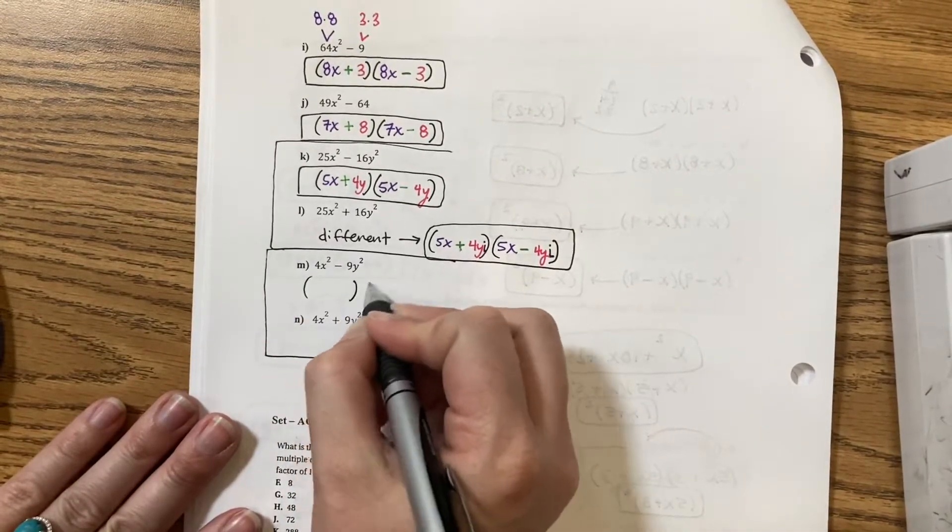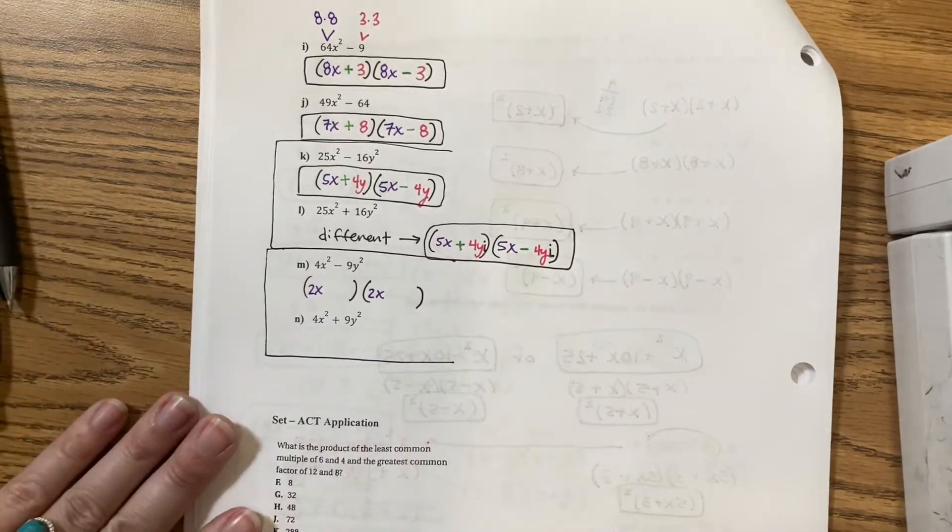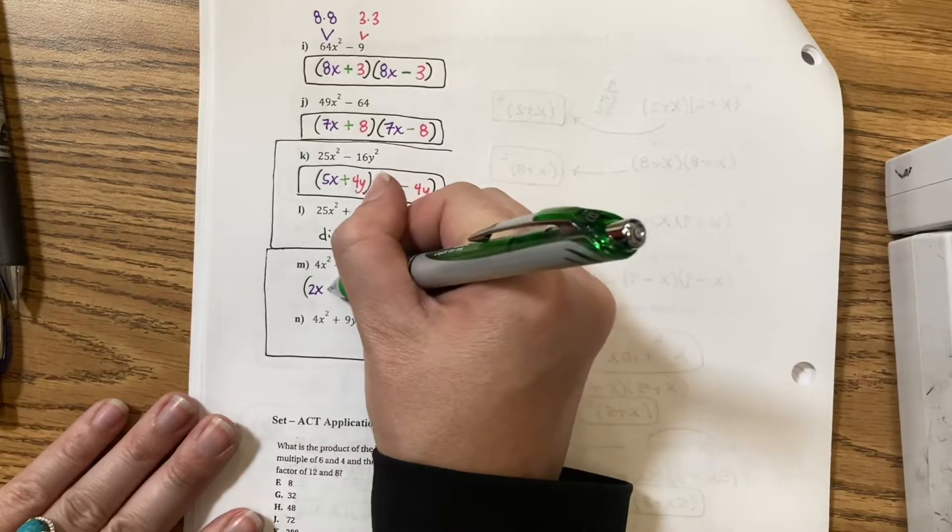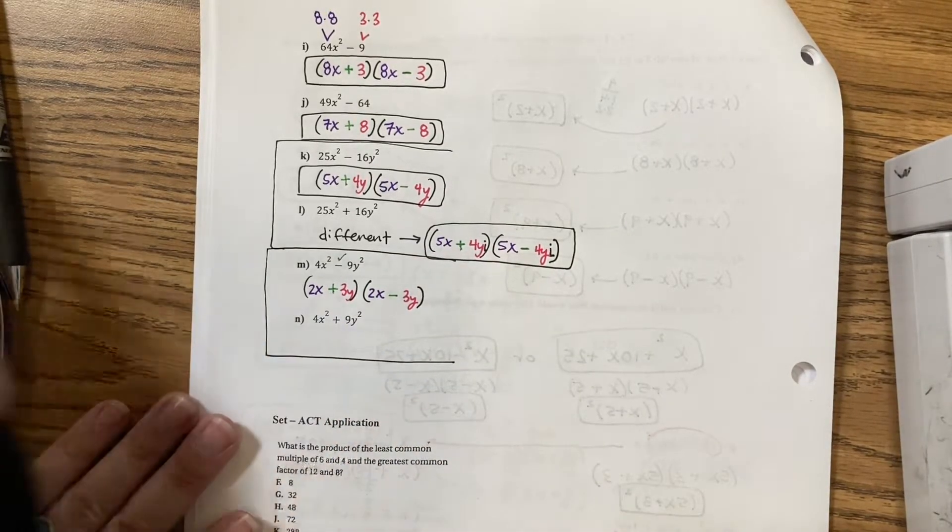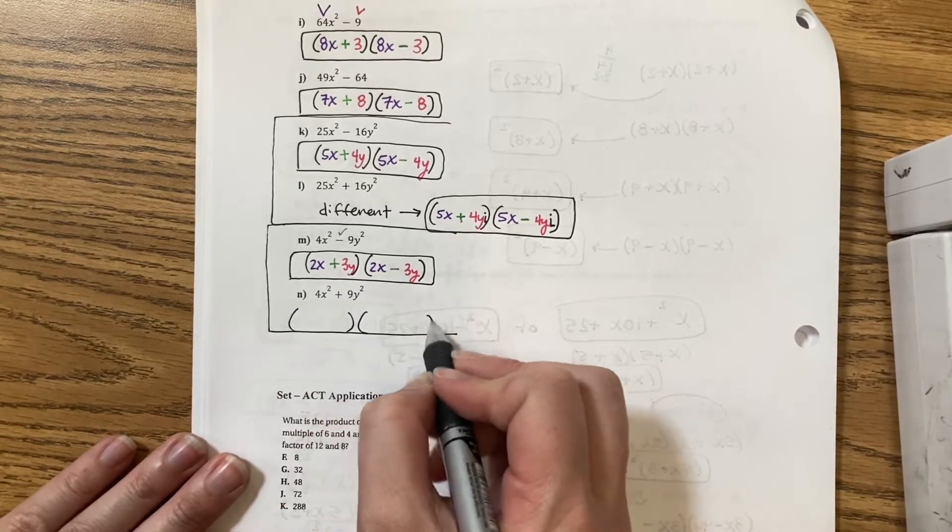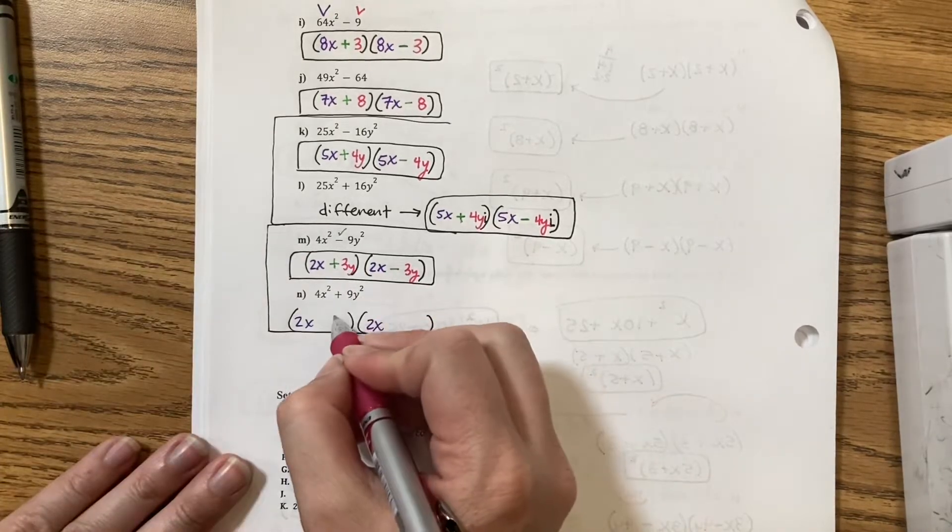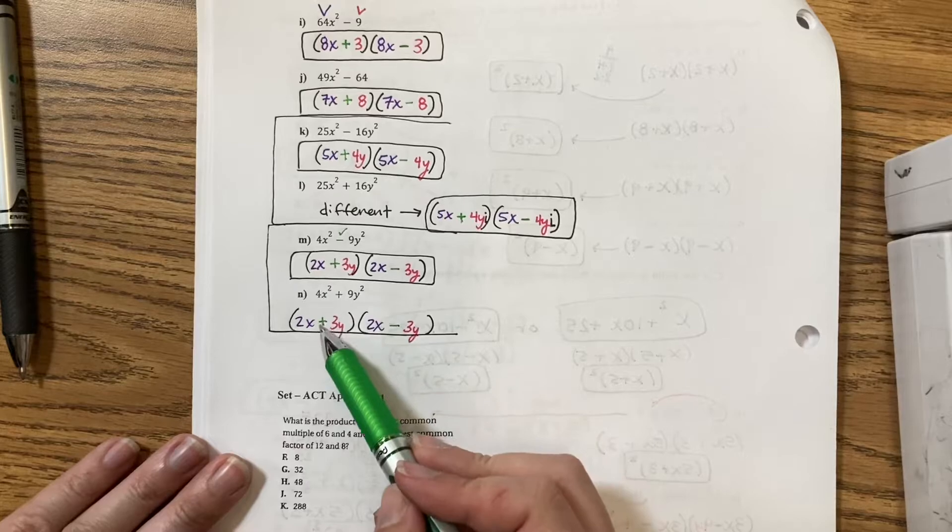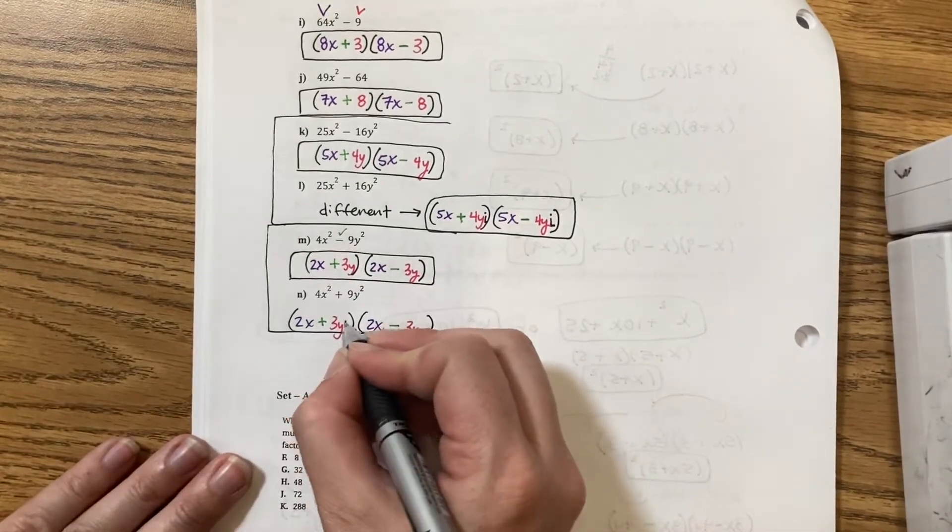So, let's try this one. I would do my parentheses. 4 is 2 times 2. 9 is 3 times 3. And then to get no middle term, I do a plus and minus. Positive 3 times negative 3 makes a negative 9. So, my sign is fine. Down here, I still have a 2x and a 2x. I still have a 3y and a 3y. I still have no middle term. But now, when I multiply positive 3 times negative 3, it makes it minus 9. So, to fix my sign, I place an i and the letter i.